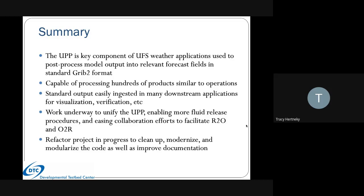In summary, the UPP is a key component of the UFS weather applications. It post-processes model output into relevant forecast fields in standard GRIB2 format that can easily be ingested by various downstream applications, and is capable of processing hundreds of products similar to operations. Work is underway to unify UPP, enabling more fluid release procedures and easing collaboration to facilitate R2O and O2R. The refactor project is in progress to clean up, modernize, and modularize the code, as well as improve documentation.